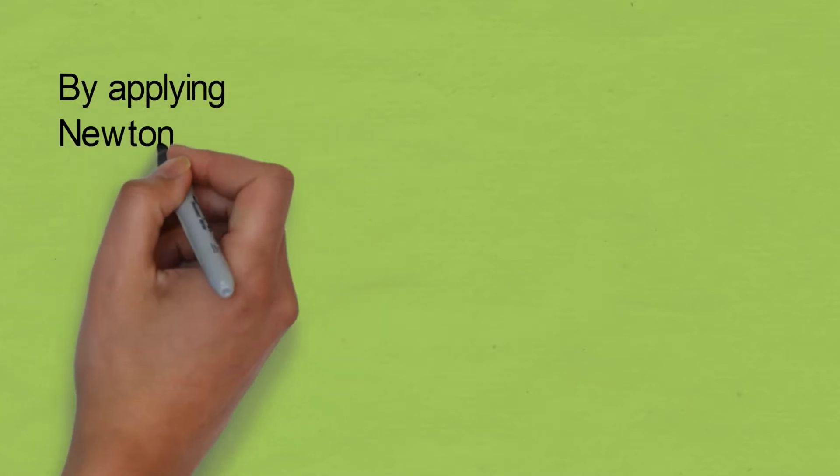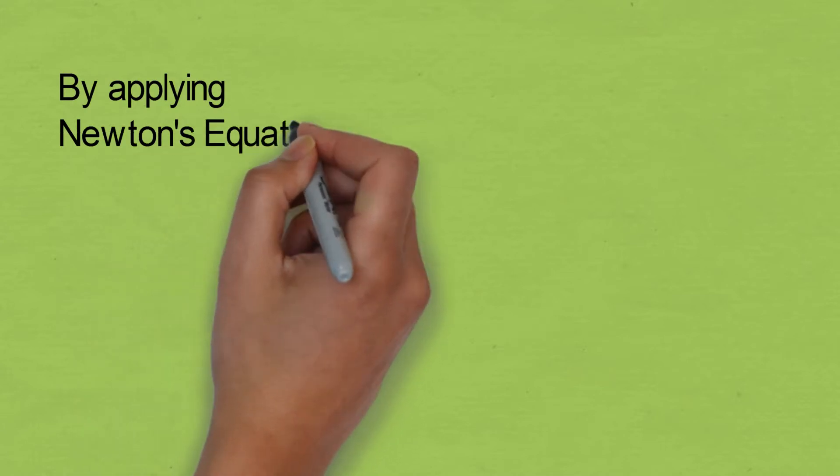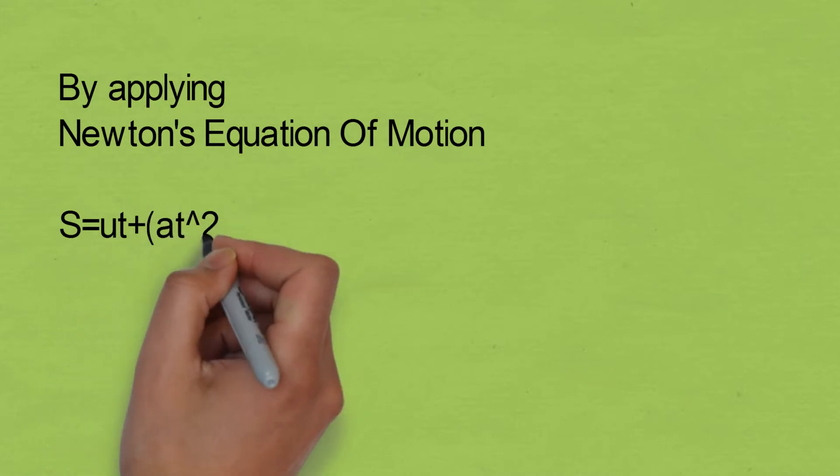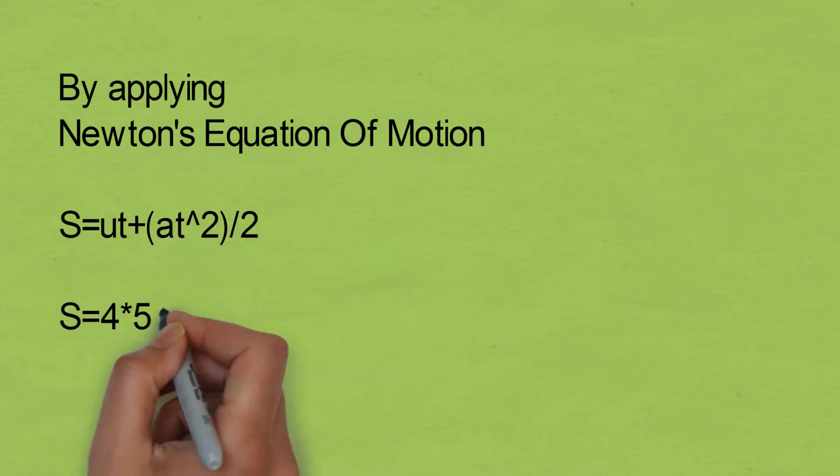s equals ut plus half a t square. Putting values of u, t, and a, s equals 4 into 5 plus 1.2 into 5 square by 2.